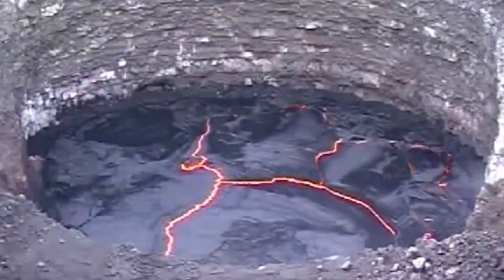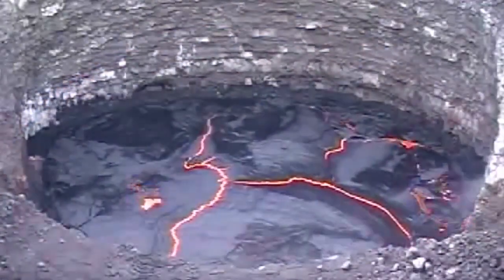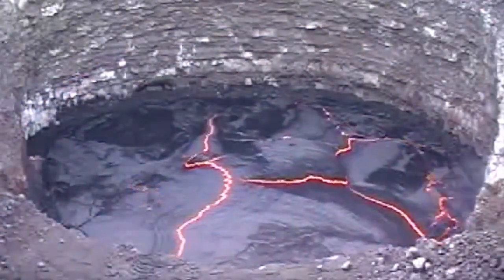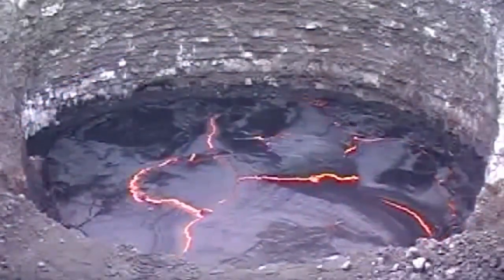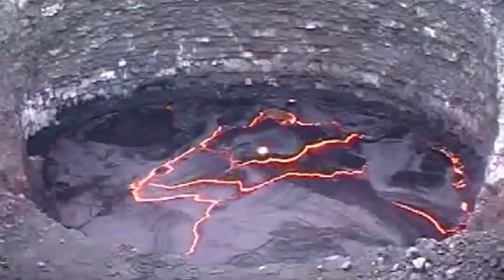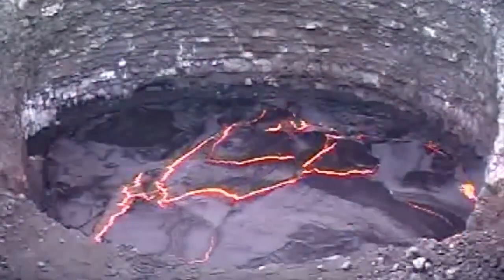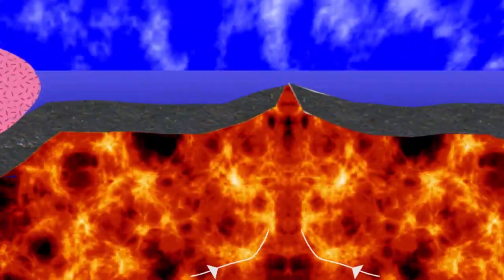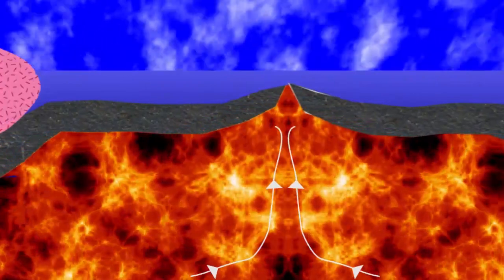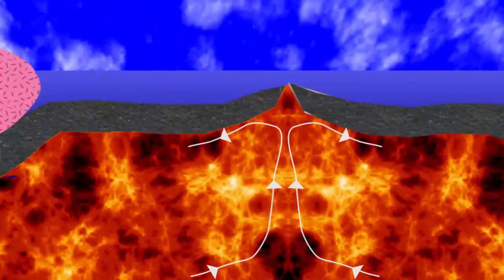Where these convection currents in the asthenosphere rise up to the base of the lithosphere — the crust and uppermost rigid mantle — the current spreads apart to complete the upper part of the convection cell.